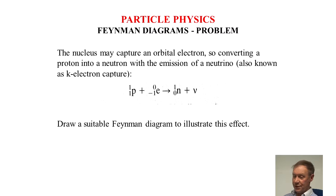a proton into a neutron with the emission of a neutrino also known as K electron capture. And there is the equation: proton plus electron goes to neutron plus neutrino. So try and draw a suitable diagram to illustrate this effect.